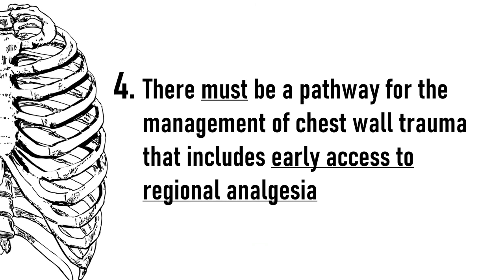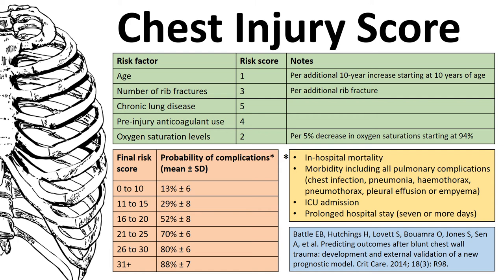Four: there must be a pathway for the management of chest wall trauma that includes early access to regional analgesia. Also, there must be network guidelines for the selection and transfer of patients who may benefit from early surgery to stabilize the chest wall. The chest injury score, developed and externally validated by Battle and colleagues, is a cumulative morbidity and mortality risk score that may help such decision making. The higher the score, the higher the risk of complications, as seen in the yellow box.